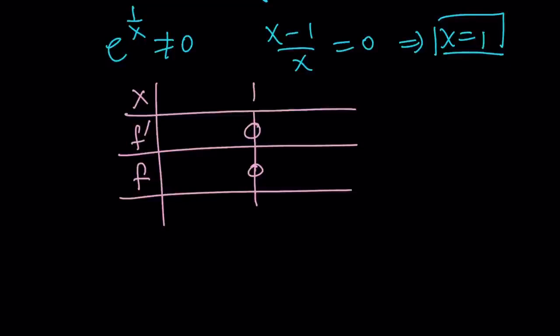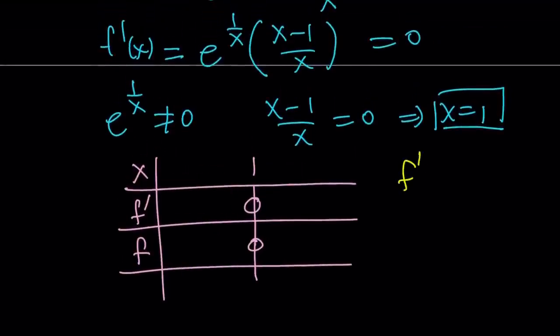Now, we want to know whether the derivative is going to be positive to the right of 1 or negative to the right of 1, because it's going to change sign. How can I tell? Well, just think about the derivative. It's f prime is e to the power of 1 over x, which is always positive, times x minus 1 over x. So, if x is greater than 1, obviously it's going to be positive. And you can always test it with something like 2, right? You can use a test value. If x is 2, you're going to get a positive quotient. e to the power of 1 over x is always positive. Therefore, our function, the derivative of our function is positive if x is greater than 1, otherwise it's negative.